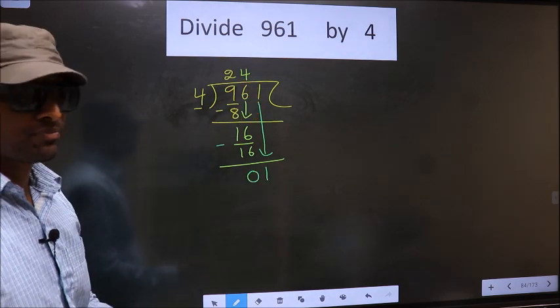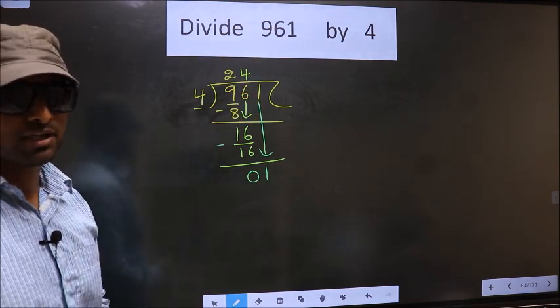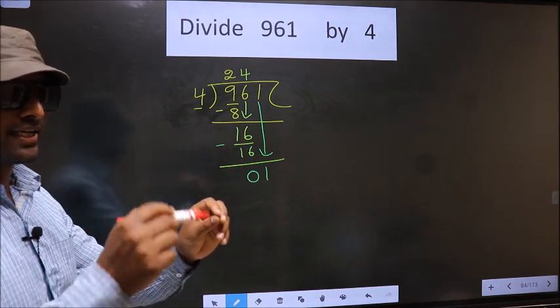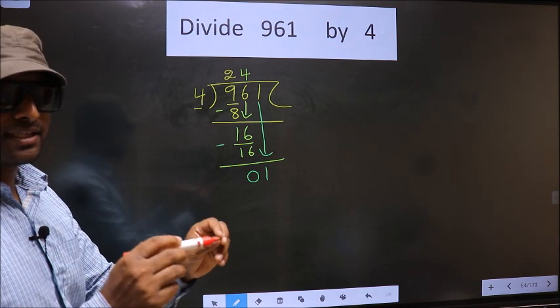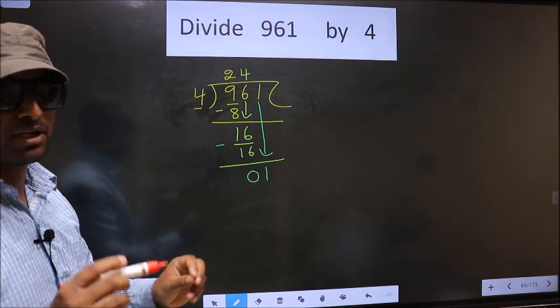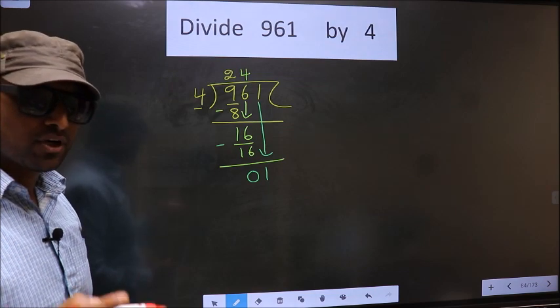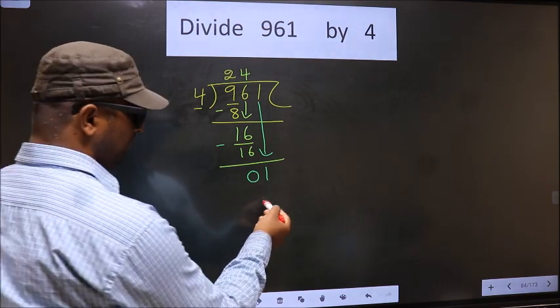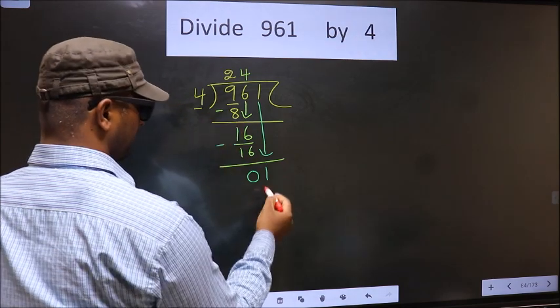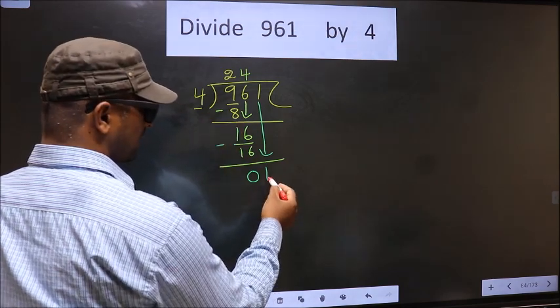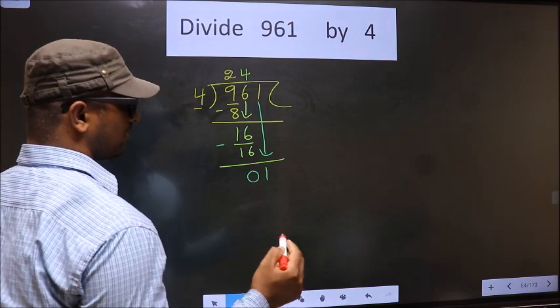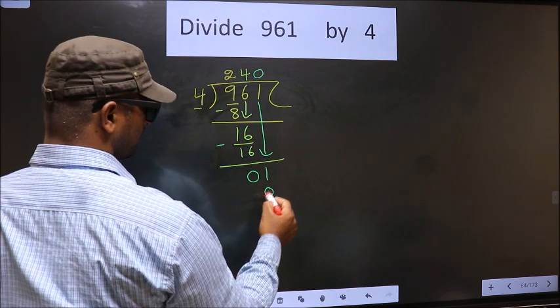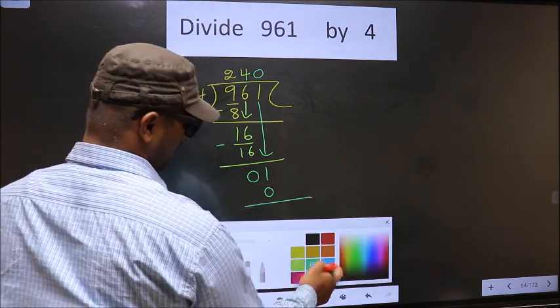I repeat: bringing the number down and putting a dot and taking 0 both at the same step, you are not supposed to do. Instead, what you should think of is what number should we write here. If we write 4 here, that is larger than 1, so what we do is we take 0. So 4×0=0. Now you subtract 1 minus 0 equals 1.